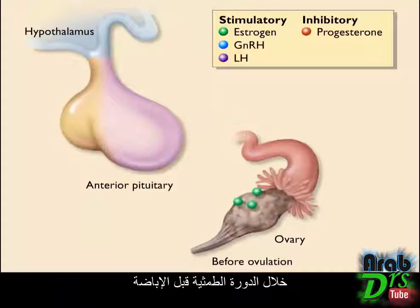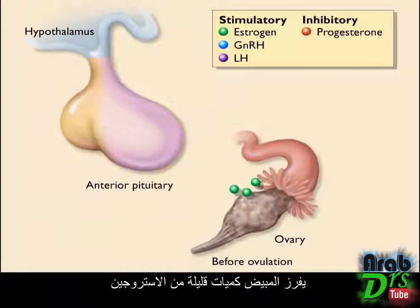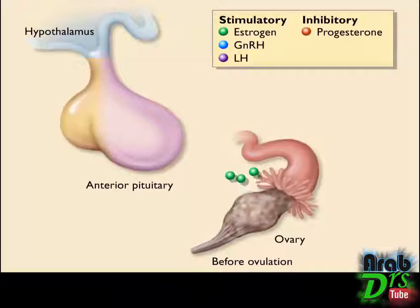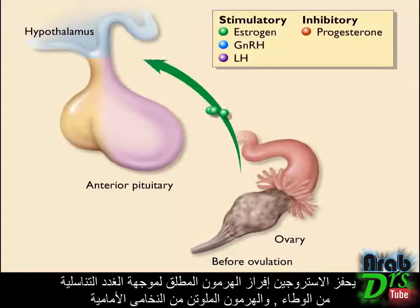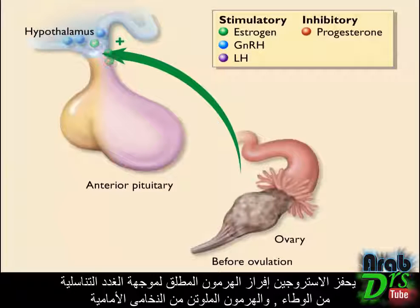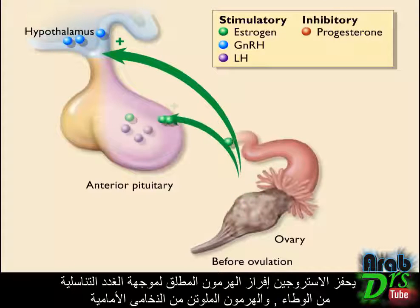During the menstrual cycle, before ovulation, small amounts of estrogen are secreted from the ovary. Estrogen stimulates the release of gonadotropin-releasing hormone from the hypothalamus and luteinizing hormone from the anterior pituitary.